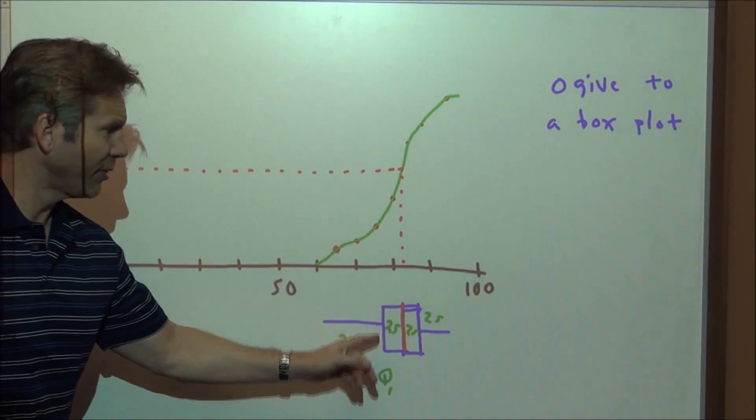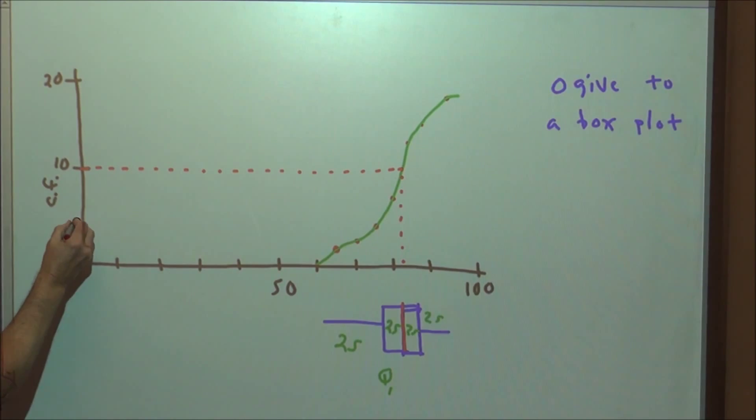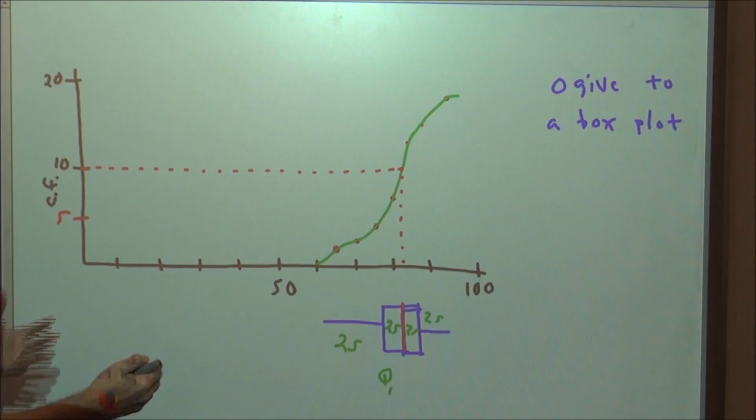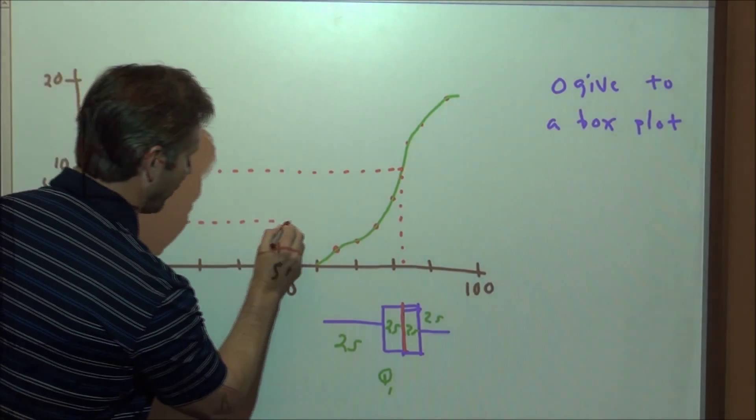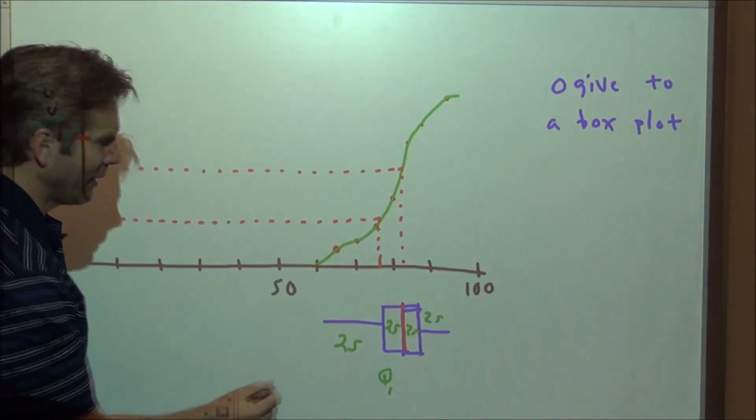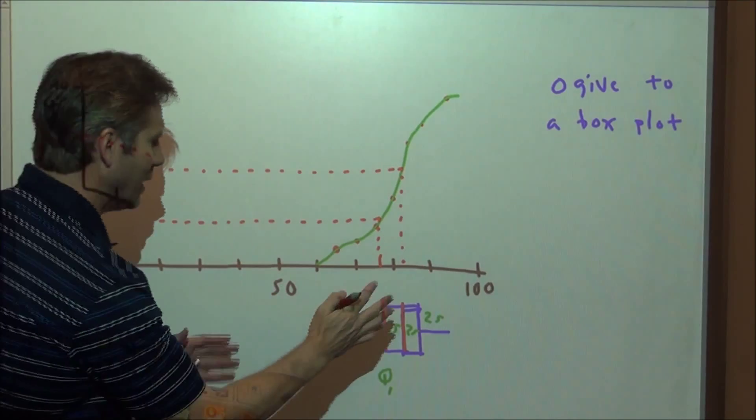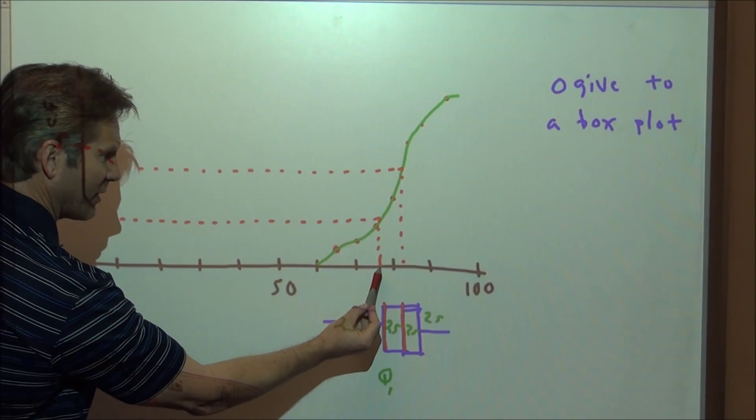We had 20 scores in the class. So by the time we get to our 10th score, we can go across from here and say, where do we hit the graph by the time we get to our 10th score? Well, it's right about there at about maybe 82 or something like that. So that's where the median is because we have 10 of our 20 scores at or below that. So 50% of the scores are below, 50% are above. Well, how do we find the first quartile? Again, glad you asked. We want to find where does 5 hit because by the time you get to the 5th score,